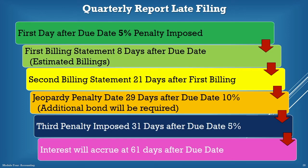The late filing schedule for a quarterly report is as follows: First day after due date, 5% penalty imposed. First billing statement, 8 days after due date, estimated billings. Second billing statement, 21 days after first billing. Jeopardy penalty date, 29 days after due date, 10% penalty and additional bond will be required. Third penalty imposed, 31 days after due date, 5%. At 61 days after the due date, interest on all prize fees due and any penalties will begin accruing according to the interest rate set by the State Comptroller's Office.